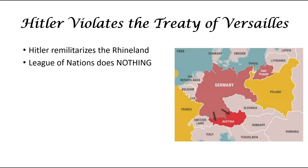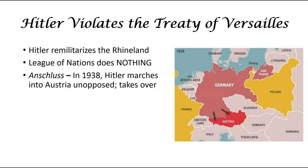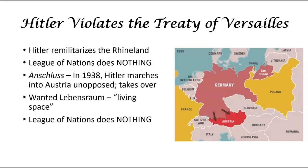Hitler says there was no consequence — he didn't get his hand smacked. And so in 1938 he begins Anschluss, marching into Austria unopposed and taking over. He claims that the Austrians and the Germans want Lebensraum, which means living space, so they just need a little more wiggle room. Most of the Austrians speak German anyway, so he tells the world they're cousins who want to come back home. That's his excuse to the world, and the League of Nations does nothing.